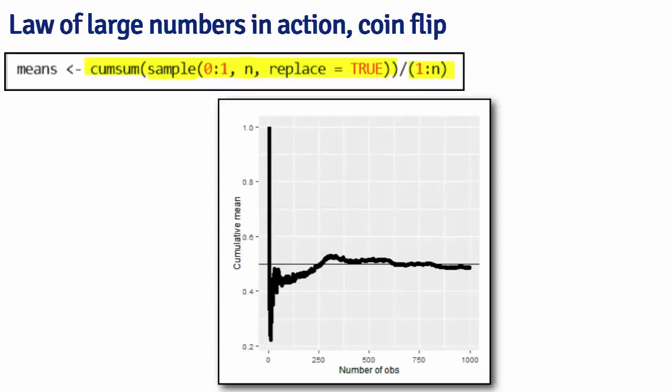When I plot the cumulative means, what I see again is variability in the sample proportion early on, but as the number of coin flips going into the sample proportion goes to infinity, it converges to the true value, which is 0.5, which is right there.